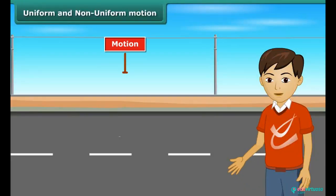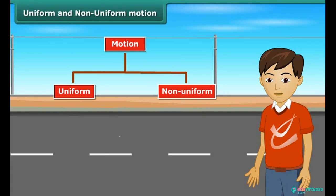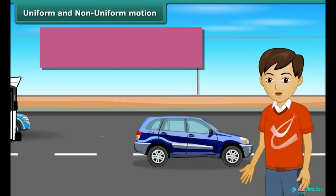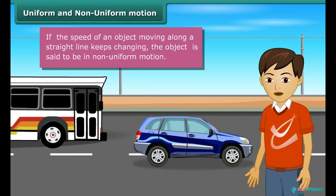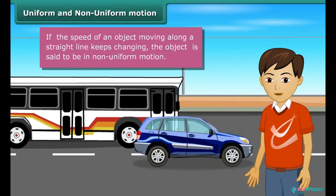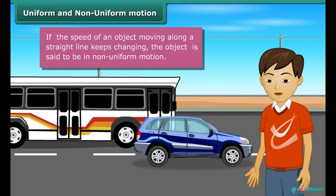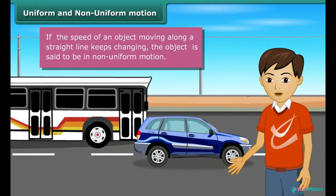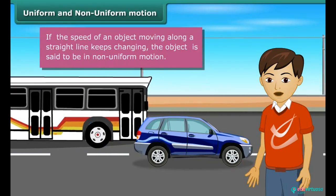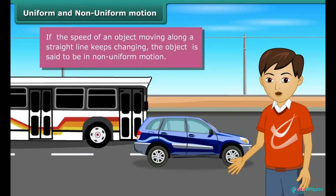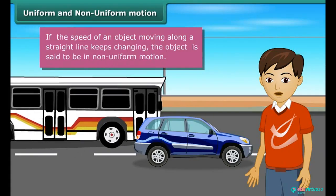Motion can be classified as uniform or non-uniform depending on the speed of an object. If the speed of an object moving along a straight line keeps changing, its motion is said to be non-uniform. A bus, for example, moves at varying speeds over varying stretches on its long route. Hence, its motion is non-uniform.